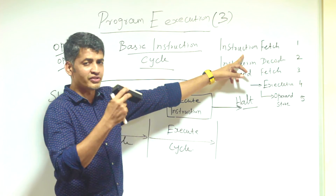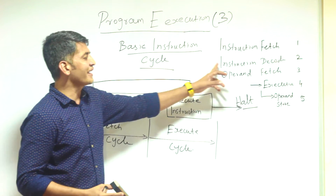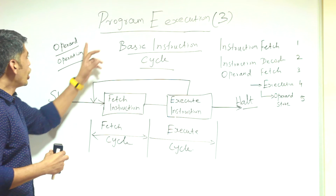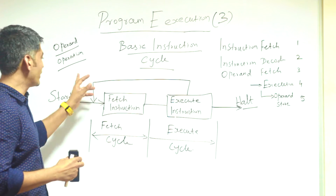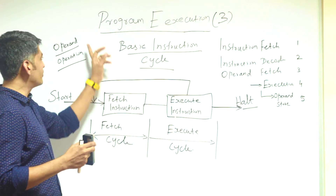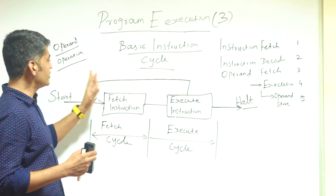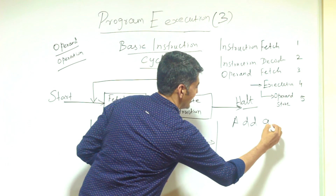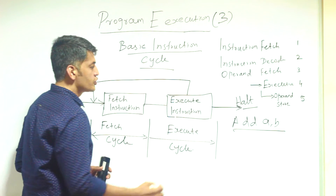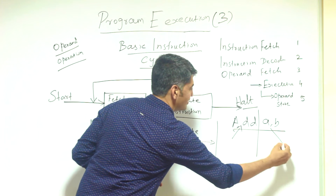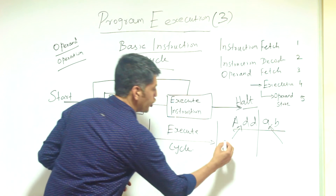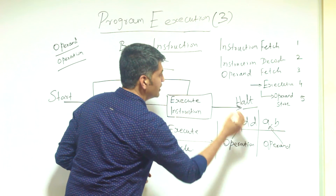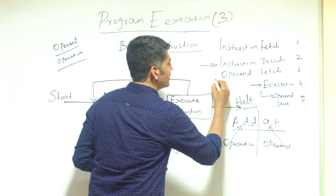The second stage is instruction decode. Every instruction has two parts: one is the operand and the second is the operation. During instruction decode, the instruction is divided into operand and operation. For example, consider the instruction 'add a, b' — it will be divided into the operation 'add' and the operand 'a, b'.